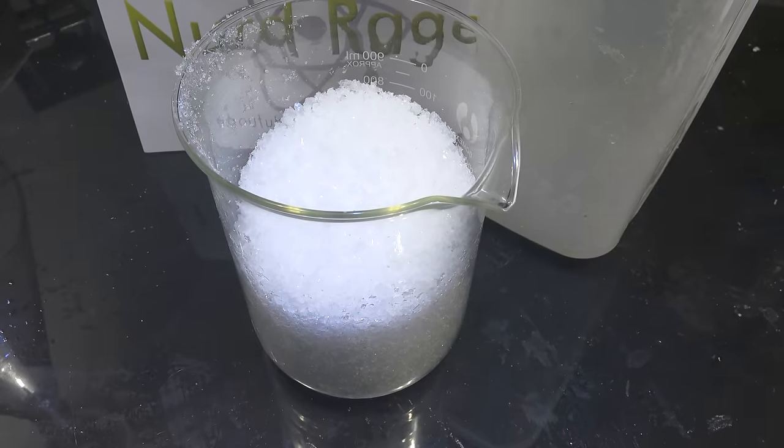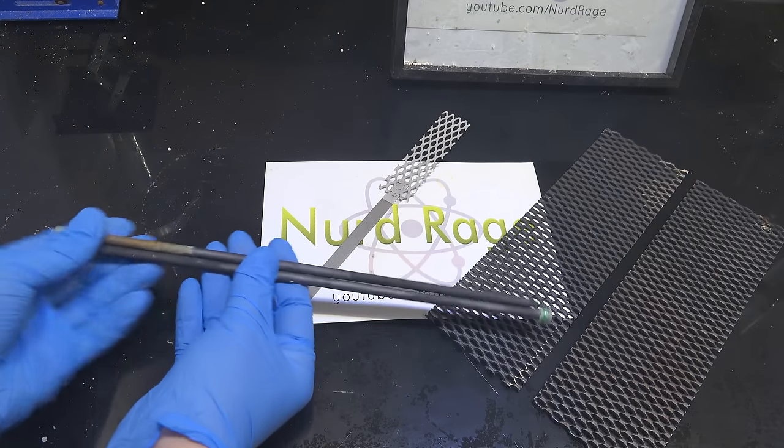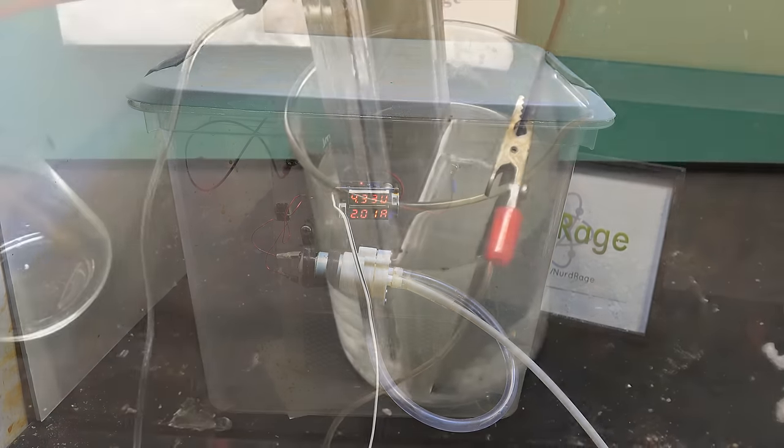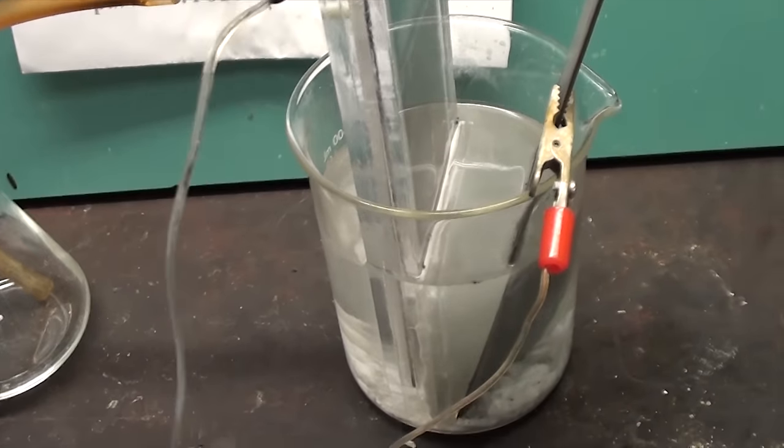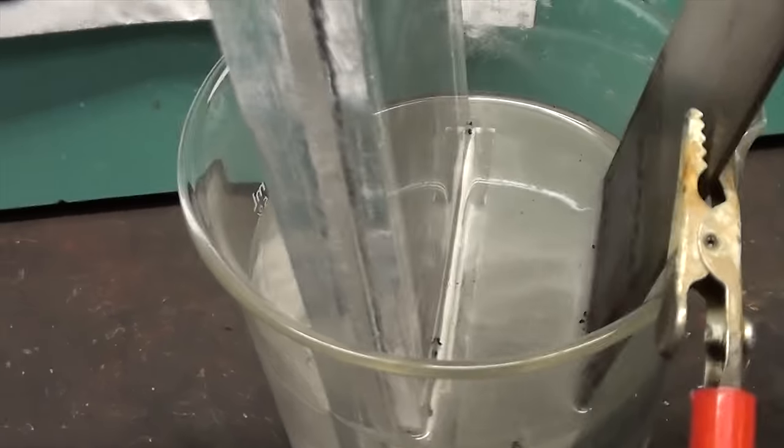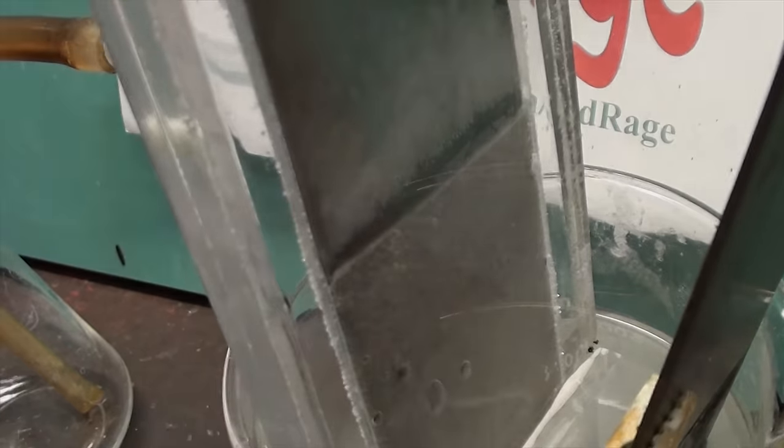And there you have it. Took over a month but with some simple parts you can buy off eBay, we made potassium chlorate by electrolysis of potassium chloride. In a future video I'll build a more advanced cell that produces potassium chlorate at greater rates with even greater efficiency in a smaller space. Thanks for watching.